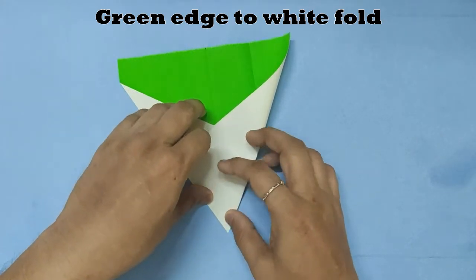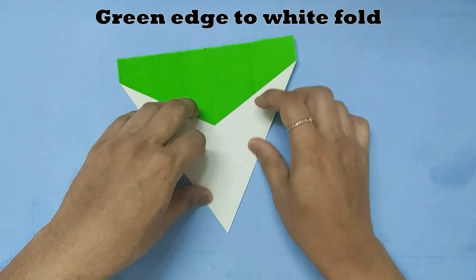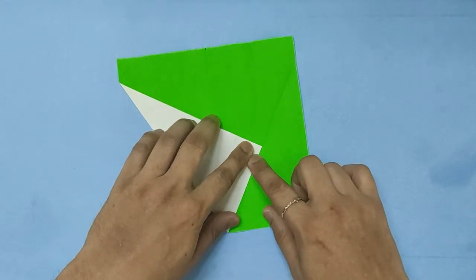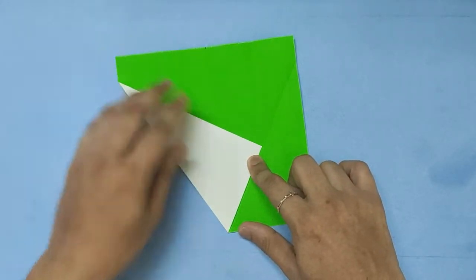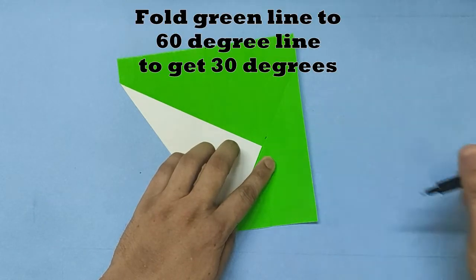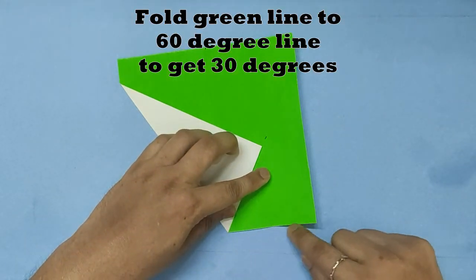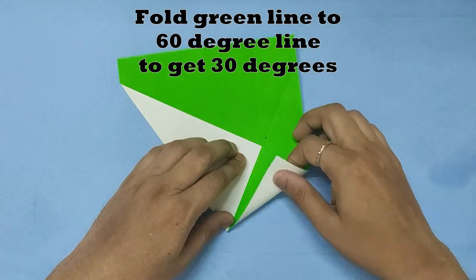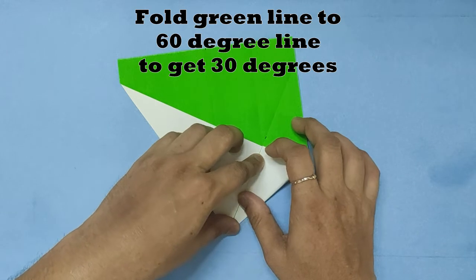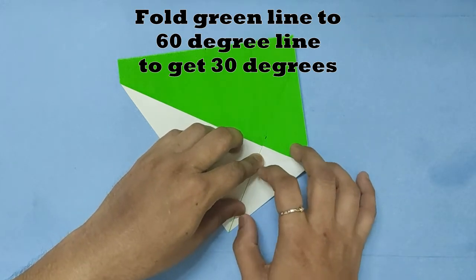That has given me a 60 degree angle. We will bring the lower edge along the 60 degrees, so we are going to bisect the 60 degree angle and get 30 degrees.